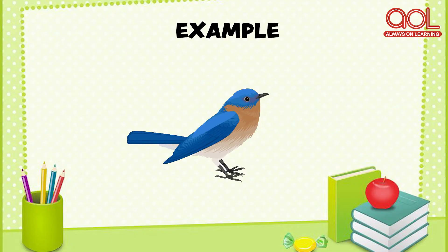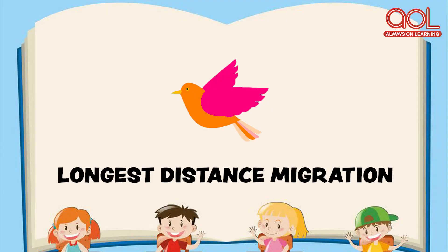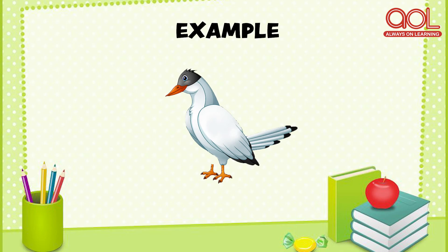Then comes medium distance migratory birds, which travel from one state to another state — that is, within a country. For example, you can take the Blue Jay. And next comes the longest distance migratory birds. A very famous example is the Arctic Tern. These birds travel thousands of miles together, not from one state to another state, but from one country to another country.